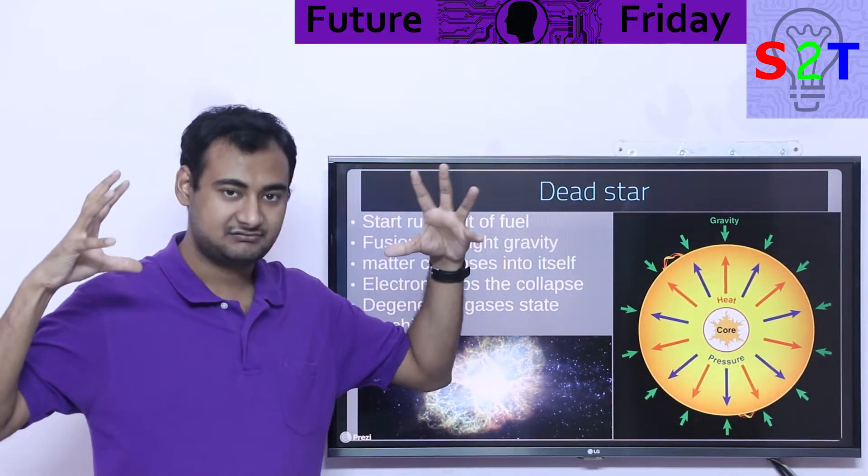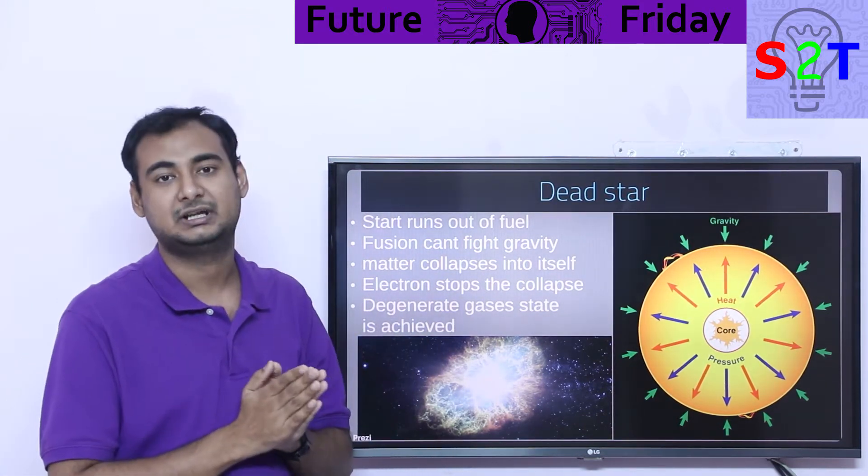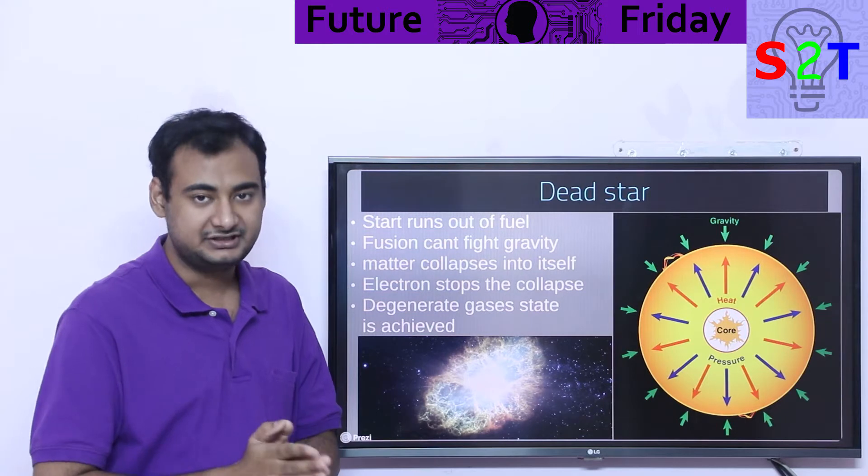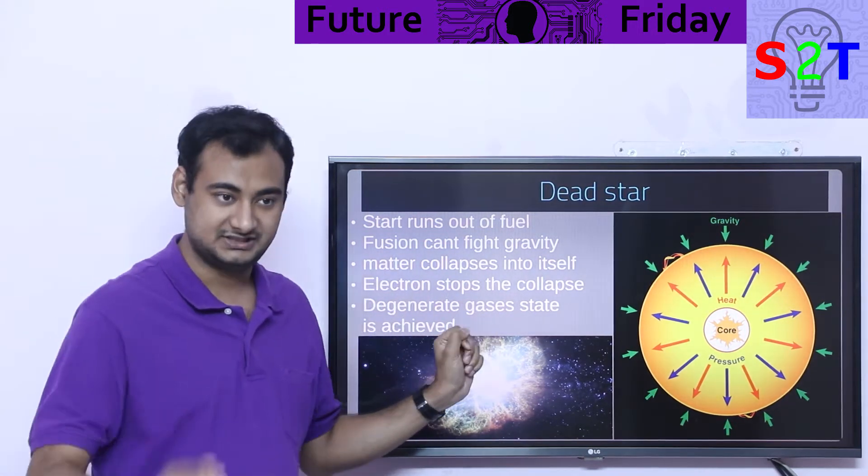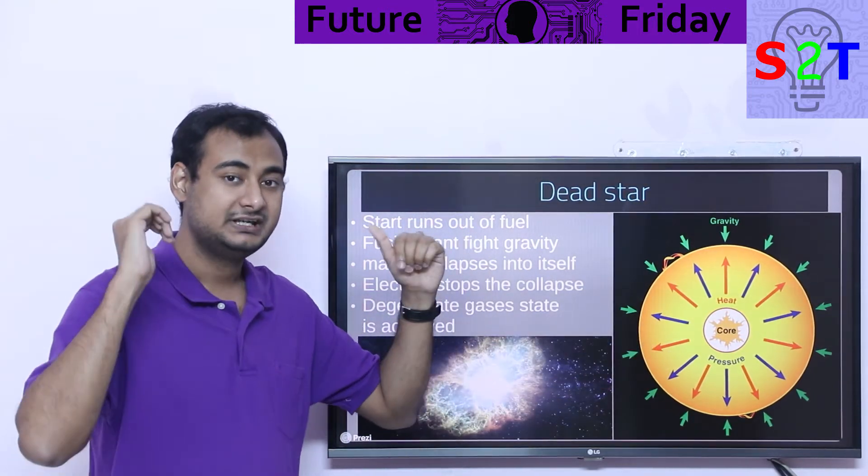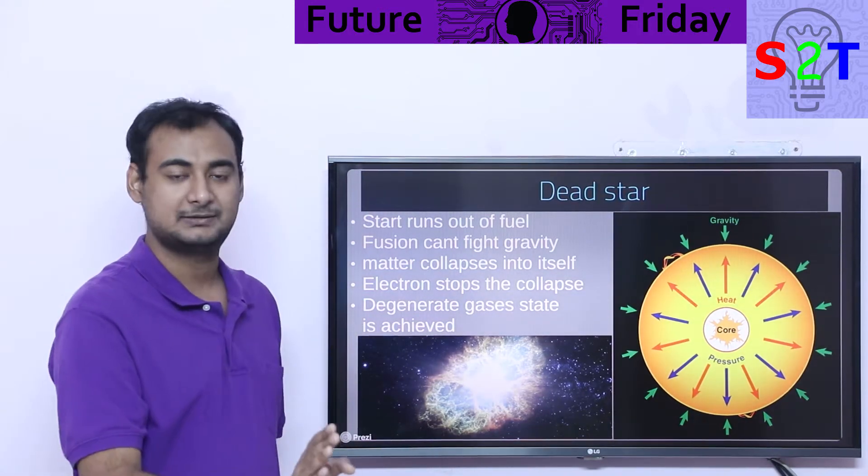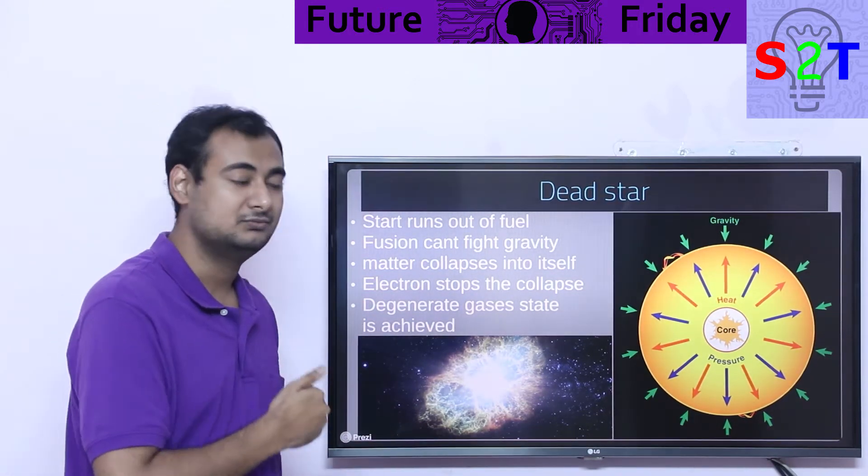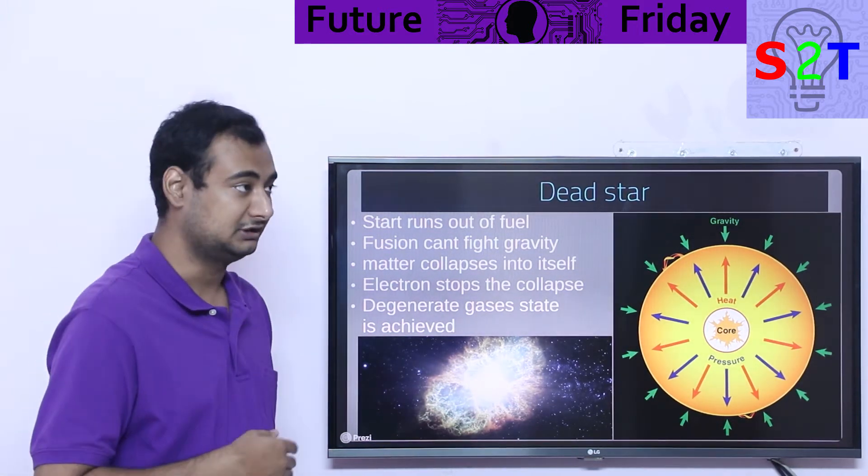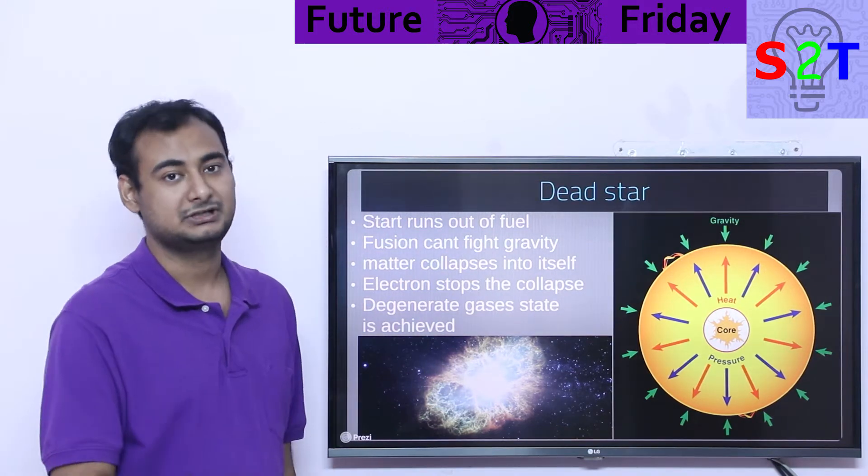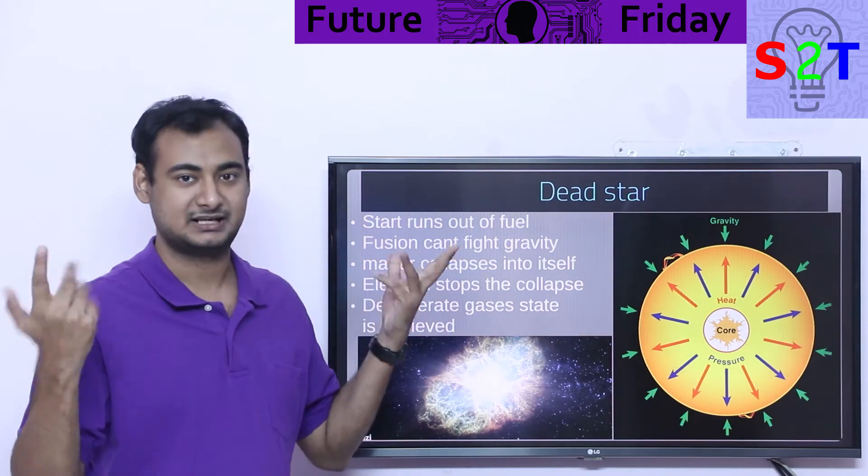When gravity starts to collapse the star and it reaches that point where electrons quantum physics doesn't allow any further compression, electrons stop it. Instead of having fusion pushing outwards, electrons will not allow you to compress anymore. Electrons apply the brakes. That's directly proportional to how heavy the starting mass was. If starting mass was too high, electrons will not be able to hold it. At that point, it will collapse to neutrons, and neutrons will hold it up. If it's even higher than that, it's a black hole.